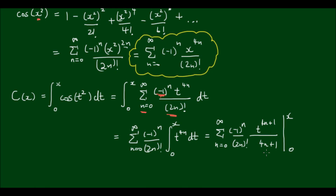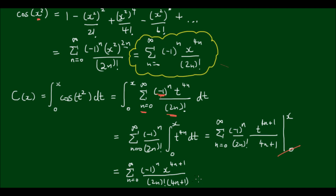What you'll notice is that this is now an odd function because all we have are odd powers — regardless of what n is, t always has an odd power. This means when we substitute 0 for the lower bound, the lower bound disappears because it equals 0. The result is simply the infinite sum of negative 1 to the n times x to the power of 4n plus 1, all over 2n factorial times 4n plus 1. And that is the explicit form of the integral of cos(x²). This was quite a heavy tutorial, so feel free to replay it several times and pause until you understand it.